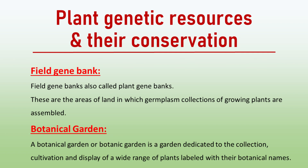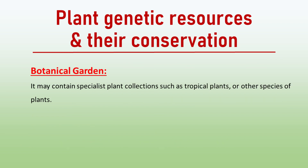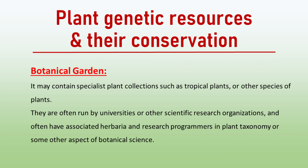A botanical garden, or botanic garden, is a garden dedicated to the collection, cultivation, and display of a wide range of plants labeled with their botanical names. It may contain specialist plant collections such as tropical plants or other species of plants. Botanical gardens are often run by universities or other scientific research organizations, and often have associated herbaria and research programs in plant taxonomy or some other aspect of botanical science.